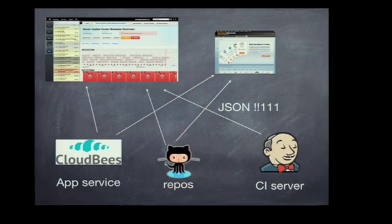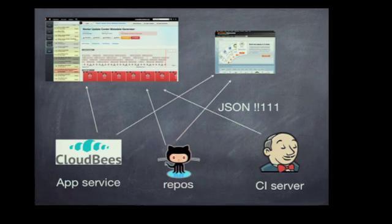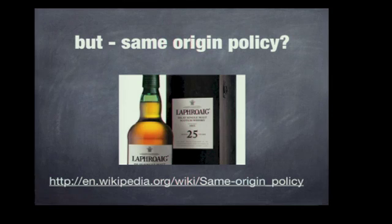Why not just bring all that integration into the browser itself? In our case, we have an application hosting service, we have a whole lot of Git repositories, and users use GitHub. That has a nice public API. We have a continuous integration service called Jenkins, and that also has an API you can consume. We'd like to mash them up into different web apps — a console, a web app, a website — without having more servers in the mix. But the problem is, if you try to build a web app and talk to five different APIs at different endpoints, you get the same origin policy.